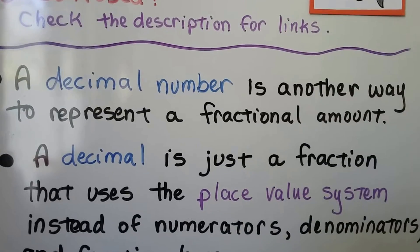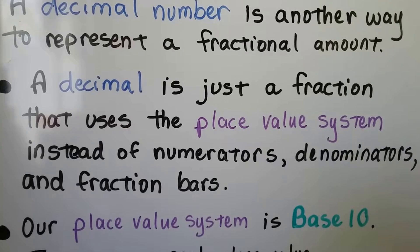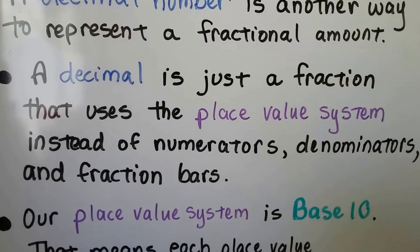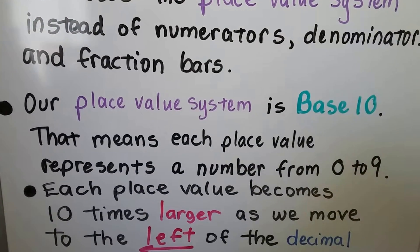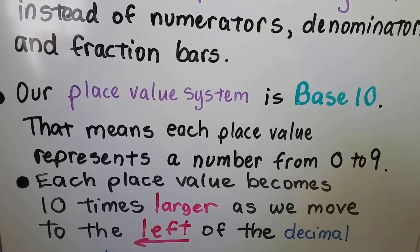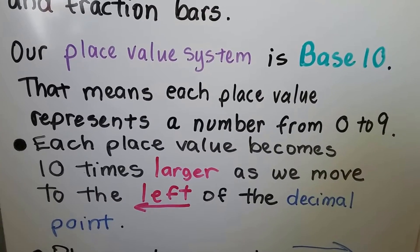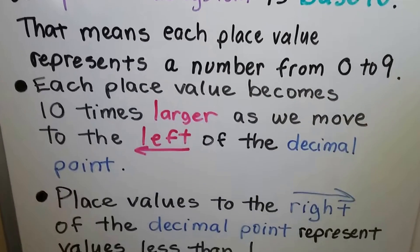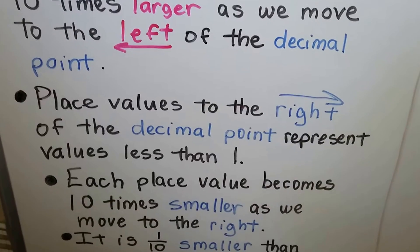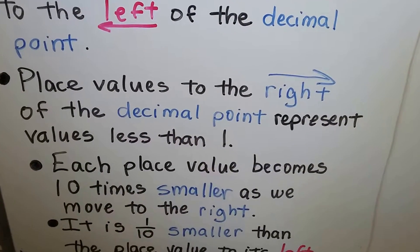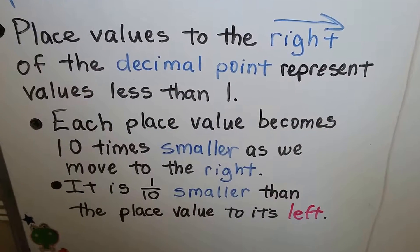A decimal number is another way to represent a fractional amount. It's just a fraction that uses the place value system instead of numerators, denominators, and fraction bars. Our place value system is base 10 — each place value represents a number from 0 to 9, and each place value becomes 10 times larger as we move to the left of the decimal point. Place values to the right of the decimal point represent values less than 1, and each becomes 10 times smaller as we move to the right — one-tenth smaller than the place value to its left.